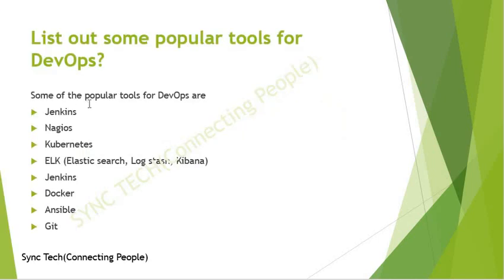So the first interview question which was asked is regarding some popular tools for DevOps. I answered with whatever popular tools I know: Jenkins, which we use for continuous integration; Nagios for the monitoring system. Not only Nagios, you can use Splunk as well, but I have not mentioned it here. So Kubernetes, Elasticsearch, Logstash, Kibana, Jenkins, Docker, Ansible, Git, Bitbucket, and so on.